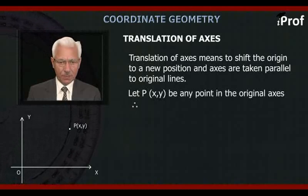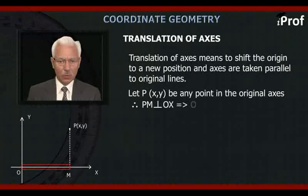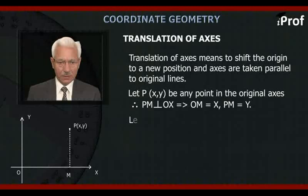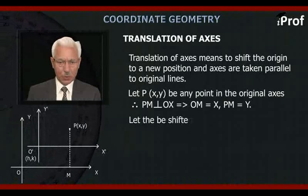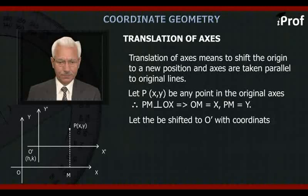That is, PM perpendicular to OX implies OM equal to X and PM equal to Y. Let the origin be shifted to the point O' with coordinates (h,k). Also, O'X' and O'Y'